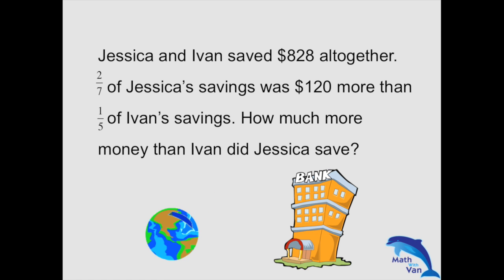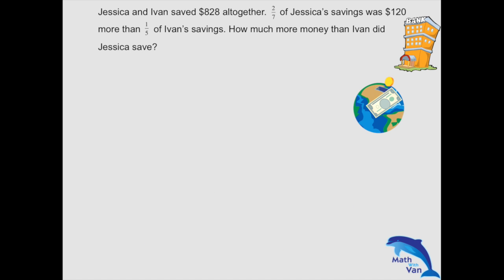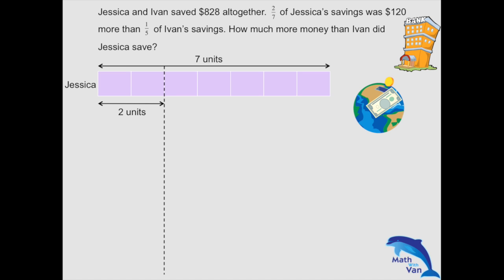How do we proceed from here? As I always say, keep things manageable — solve them by breaking the whole question into manageable parts. So for two out of seven of Jessica's savings, we would call her seven units, and that two out of seven becomes two units.